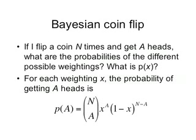Remember we did the Bayesian probability where we flipped the problem with the yellow circles — we do the same thing here with the coin. So if I flip a coin n times and get a heads, this is now your given information. Before we said suppose the weight is x, what's the probability of getting a heads on n tosses? Now I'm saying we flip the coin n times and get exactly a heads, and I'm asking: what's the probability distribution for the different weightings? What is the probability distribution for x? For each weighting x, the probability of getting a heads on n flips was n choose a, x to the a, 1 minus x to the n minus a.